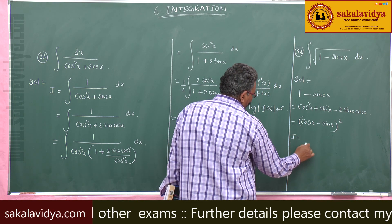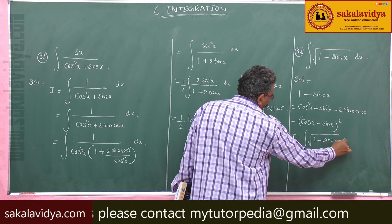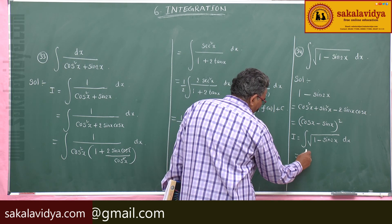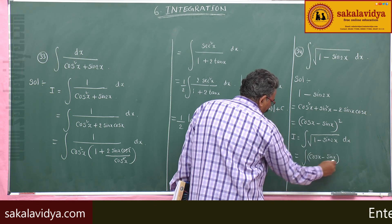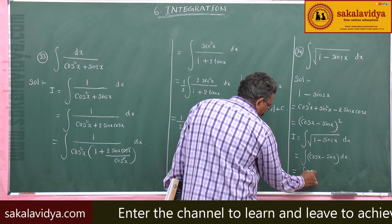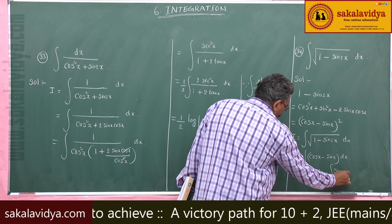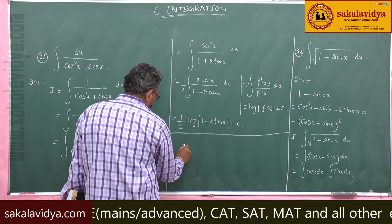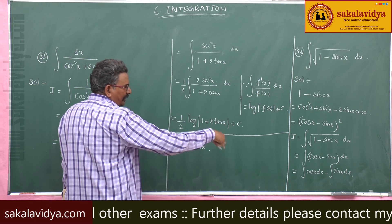So the square root of 1 minus sin 2x is cos x minus sin x. Now i equals integral of root of 1 minus sin 2x dx. So this becomes integral of cos x minus sin x dx. Separating: integral of cos x dx is sin x, and integral of sin x dx is minus cos x. So the answer is sin x plus cos x plus constant of integration.